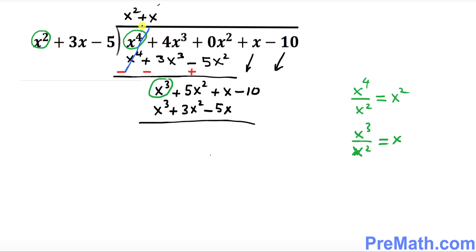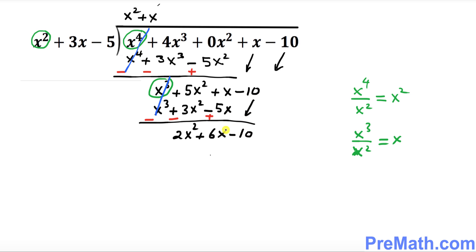Let's go ahead and change the sign — switch the sign. This positive becomes negative, this positive becomes negative, this negative becomes positive. So these two terms are gone. What we end up with: 2x² minus 3x² makes 2x² plus 6x. Now bring down this −10 right up here.